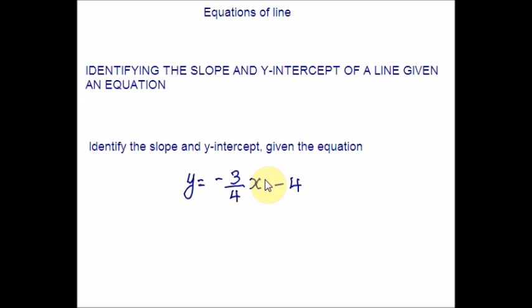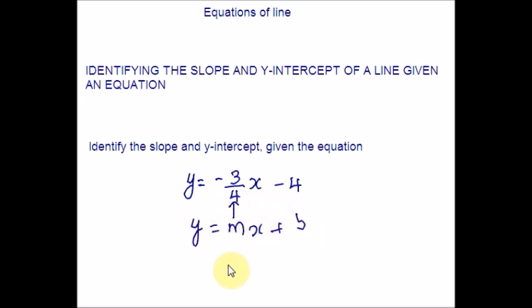Here is the example. We are supposed to identify the slope and y-intercept from the given equation. This equation is already written in y = mx + b format. In case it is not given in that format, you have to rearrange — do some algebraic steps to bring the equation into y = mx + b form. Only then can you identify the slope and y-intercept. So in the place of m we have −3/4. Please make sure you do not miss the signs. And the y-intercept b is −4. This is how we identify slope and y-intercept from a given equation.